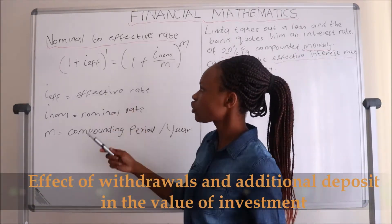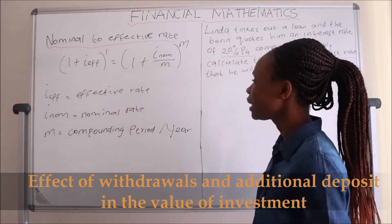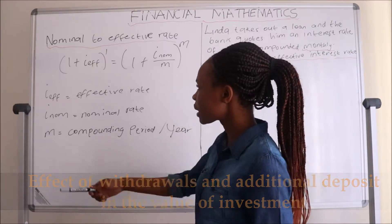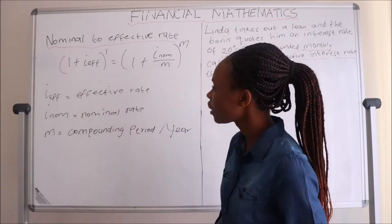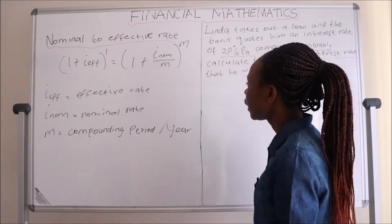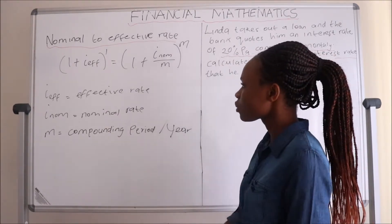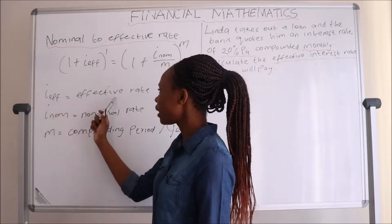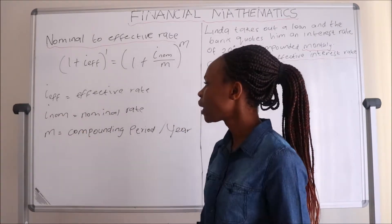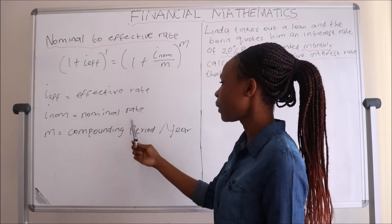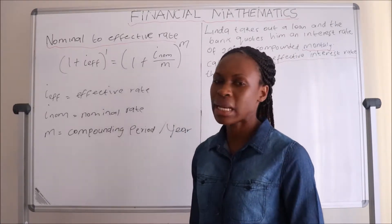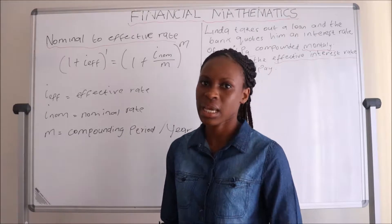Here I have an equation which converts the nominal interest rate to an effective interest rate, where the equivalence is: I_effective = (1 + I_nominal / M)^M − 1. Here, I_eff stands for the effective interest rate, I_norm stands for the nominal interest rate, and M is the number of times the nominal interest rate has been compounded annually.